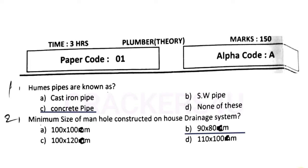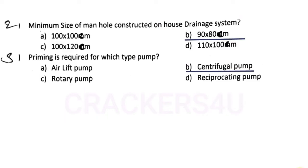Question number two: minimum size of manhole constructed on house drainage system — answer option B, 90 into 80 cm. Question number three: priming is required for which type of pump — answer option B, centrifugal pump.